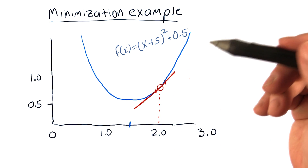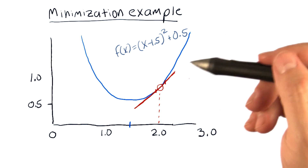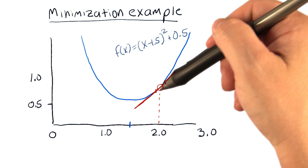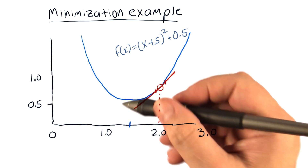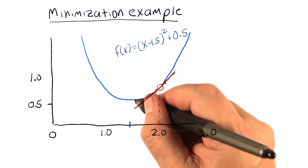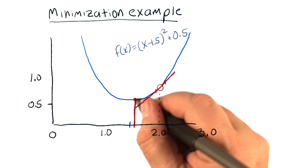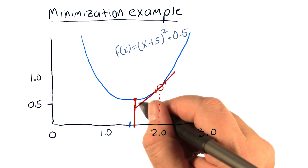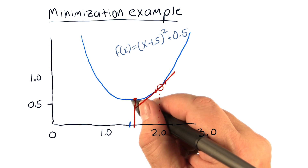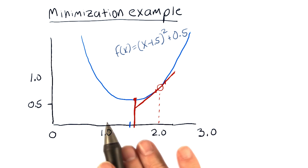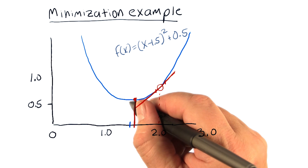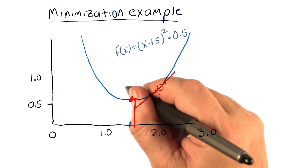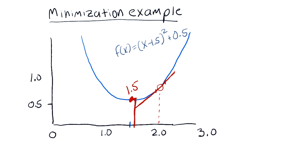Now it's trying to minimize, and so what it does is march downhill — it's called gradient descent. It tries another value down along that slope, gets a particular value, tries another one, and so on. Eventually it narrows in and discovers that 1.5 is the value for x at the minima.